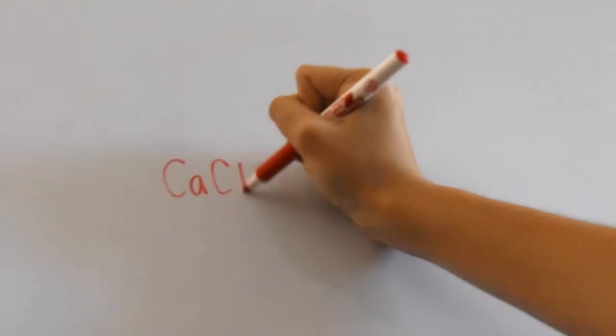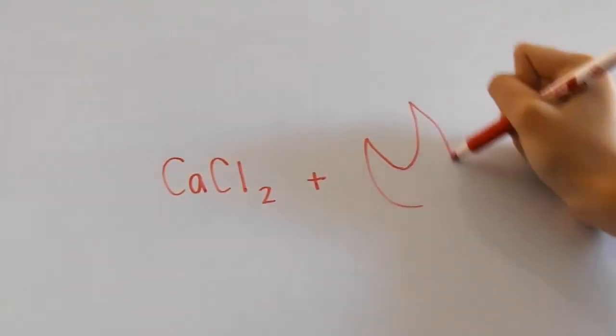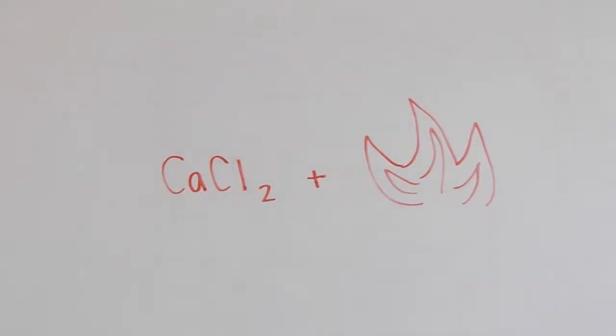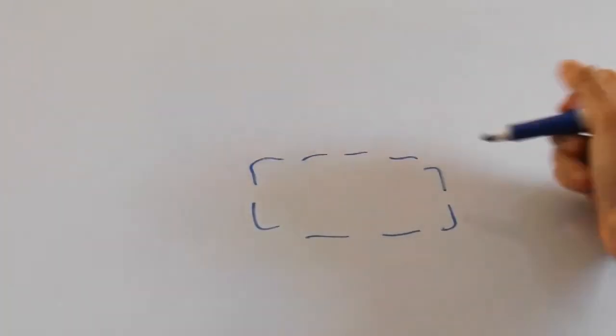So first, the bacterial cells are made competent, meaning that they are able to take up a plasmid. Calcium chloride and a process called heat shock are used in order to alter the cell walls, allowing DNA to pass through more easily.